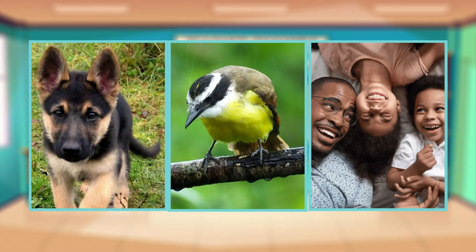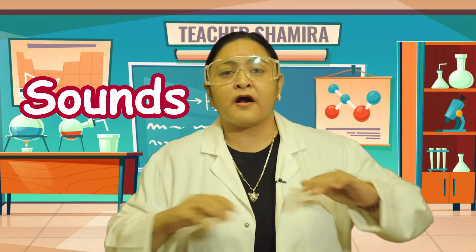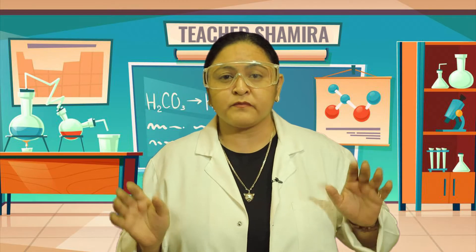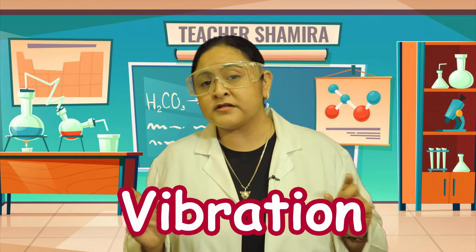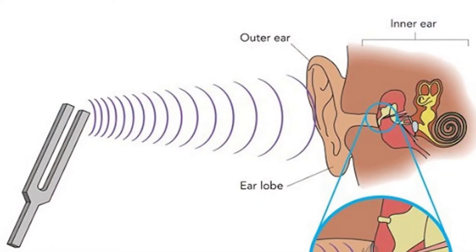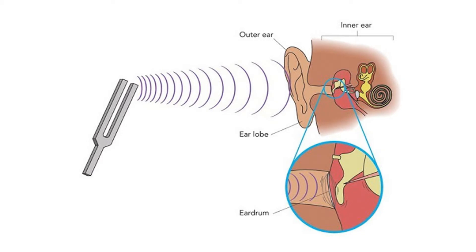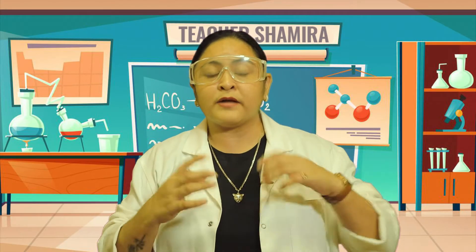Who can tell me what all of these things are? These things are called sounds. Sounds are all around us. Every day we listen to different types of sounds. It doesn't matter what produces the sounds — sounds are made the same way, through vibration. Can anyone tell me what vibration is? Vibration is the back and forth movement of an object. Sounds are created when an object vibrates and sends waves of energy to our ears.